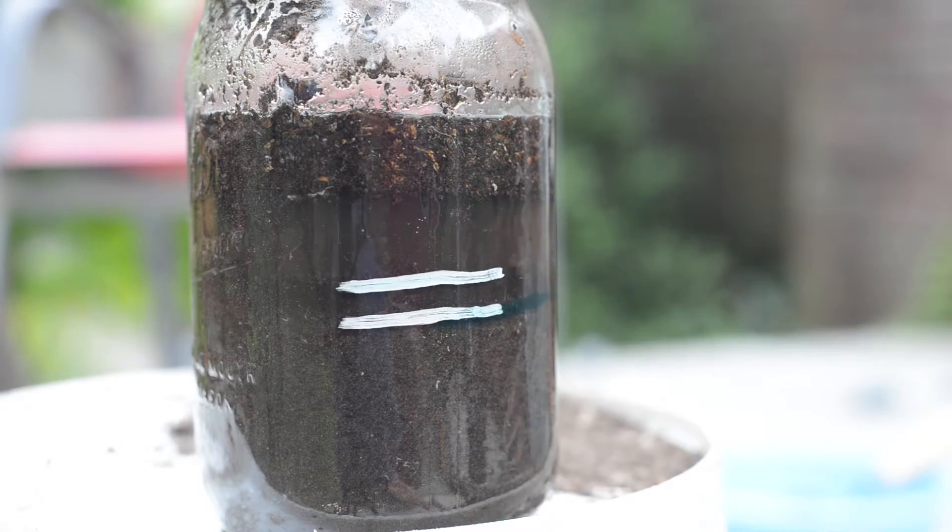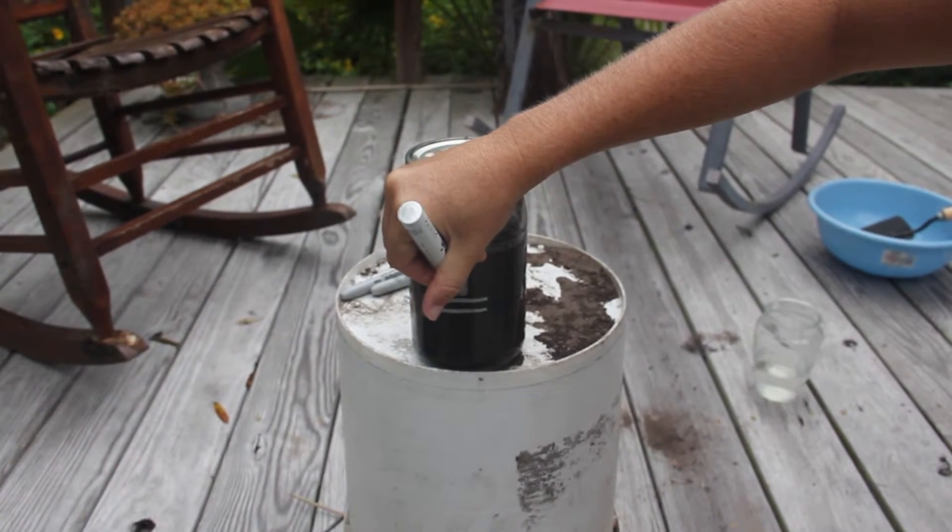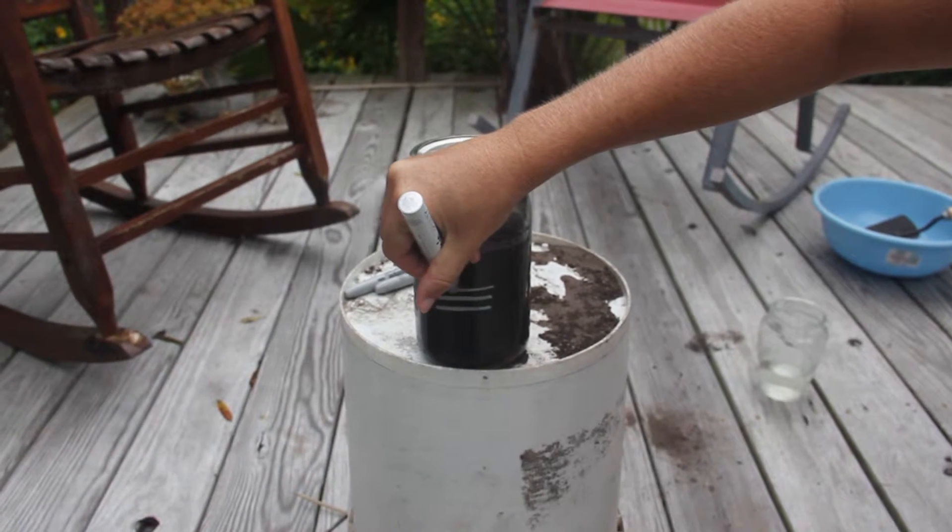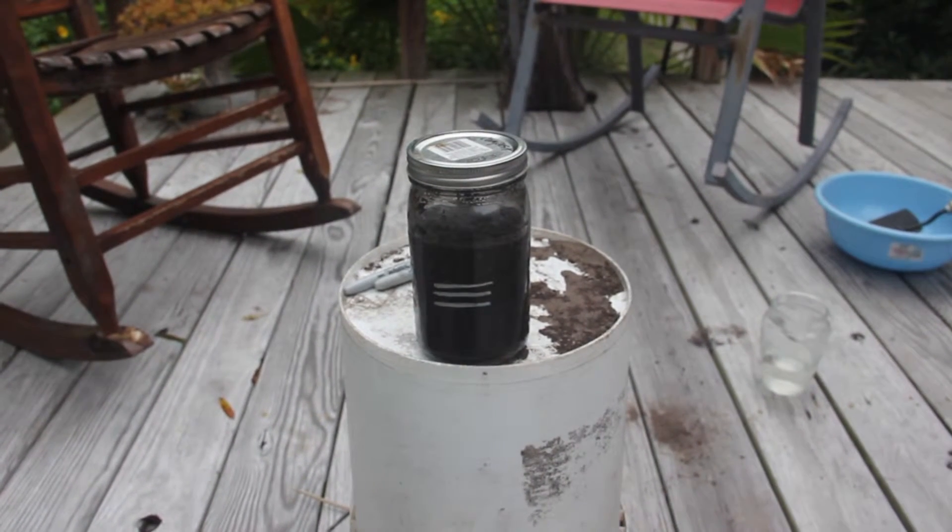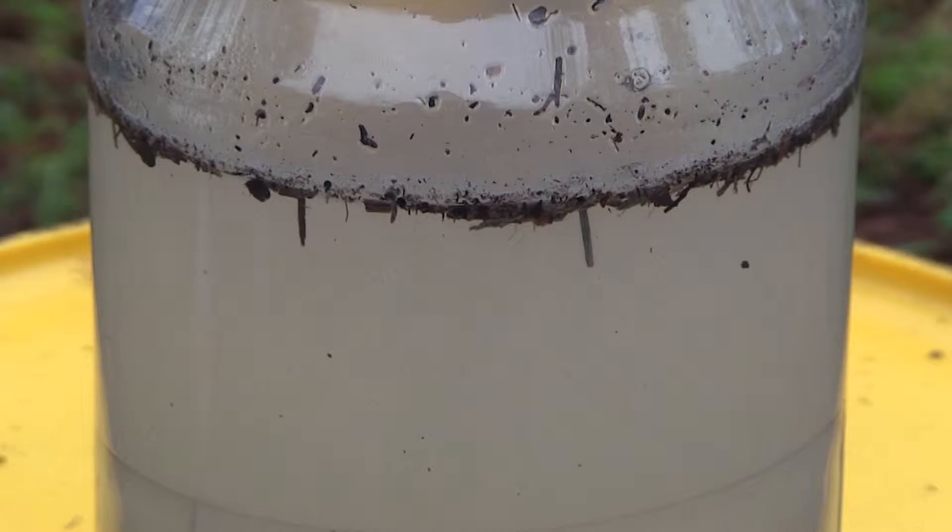Next, leave the jar alone for two days. After this time, when you check on the jar, the clay will have settled out, forming a layer on top of the silt. Mark the top of the clay layer. Also note the organic matter floating at the top of the water.